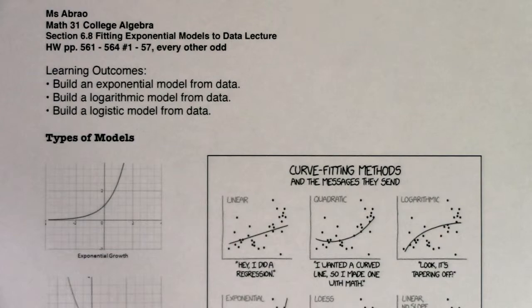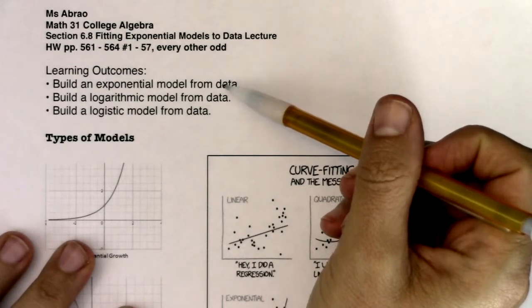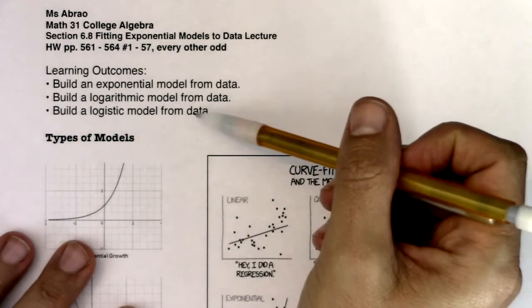Hey Math 31, welcome to the last section in this chapter. It's going to be all stats. We're going to build exponential models from data, logarithmic models from data, and logistic models from data.